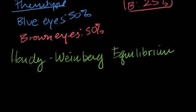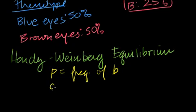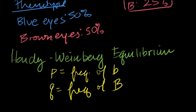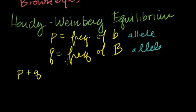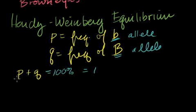So if P is the frequency of the blue allele and Q is equal to the frequency of the brown allele, what's P plus Q going to be? Well, everything is either going to have a blue or a brown allele. If you were to count the chromosomes and see what percentage have the blue allele and what percentage have the brown allele, every chromosome has to have either one, so these are going to add up to 100%, or equal to 1. For example, if 30% of the alleles are blue, then 70% are going to have to be brown.